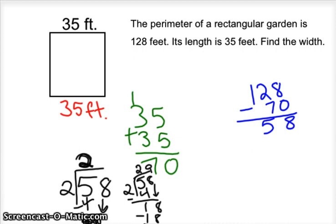29. So it's 29 for the width on that side, and it's 29 on the width for the other side. How could we check this?